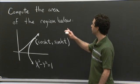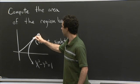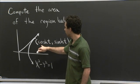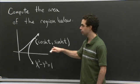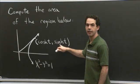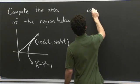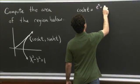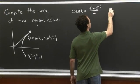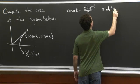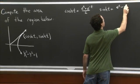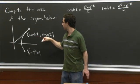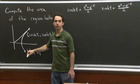The question is: compute the area of the region below. I have here the hyperbola x squared minus y squared equals 1, and I've chosen a point on the hyperbola whose coordinates are cosh t, sinh t. Remember that cosh t is the hyperbolic cosine and sinh t is the hyperbolic sine, given by cosh t equals (e^t + e^{-t})/2 and sinh t equals (e^t - e^{-t})/2. This point cosh t, sinh t is a point on the right branch of this hyperbola.